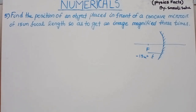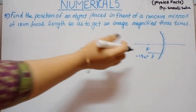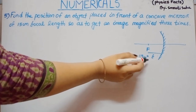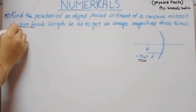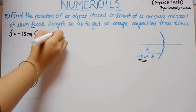Next question: find the position of an object placed in front of a concave mirror of 15 cm focal length so as to get an image magnified 3 times. We need to determine the object distance. For a concave mirror, focal length sign convention is negative, so F = −15 cm.